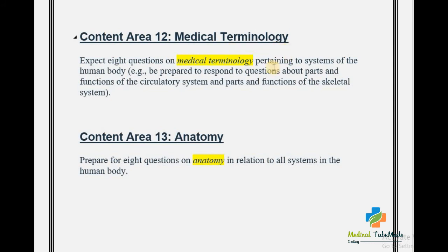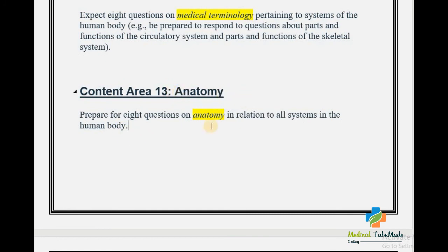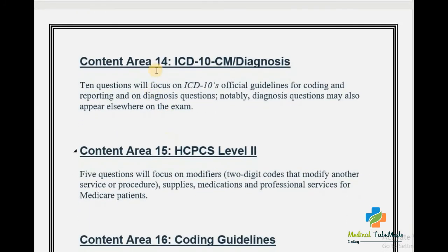Content Area 12 is Medical Terminology. You can expect 8 questions on medical terminology pertaining to the systems of the human body — for example, be prepared to respond to questions about the parts and function of the circulatory system and parts and function of the skeletal system. Content Area 13 is Anatomy. Be prepared for 8 questions on anatomy in relation to all systems in the human body.